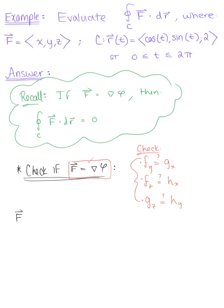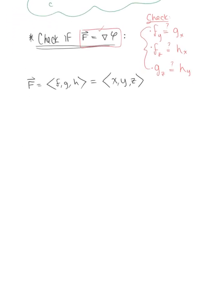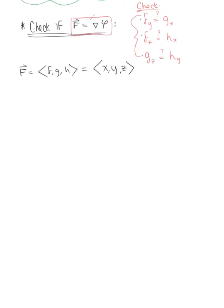Now we're given this vector field F defined in space, with components F, G, H, and a vector (x, y, z). Let's find all of our partial derivatives. Since F = x, the partial derivative of F with respect to Y and the partial derivative of F with respect to Z are both zero.